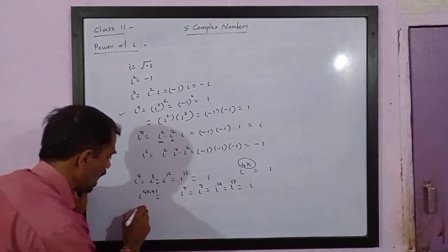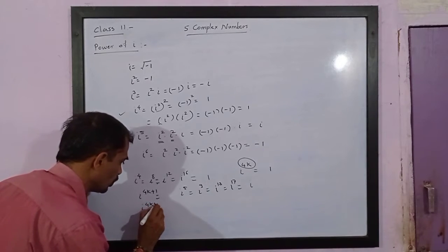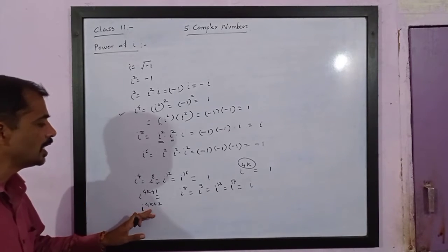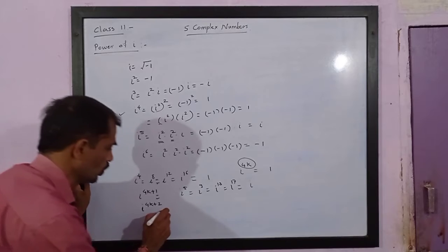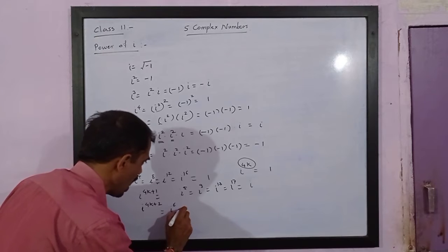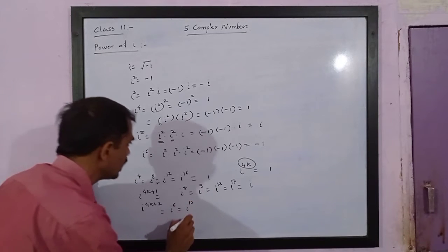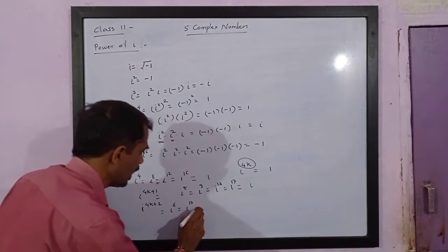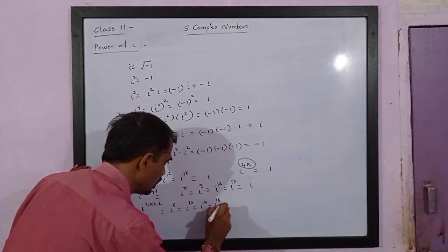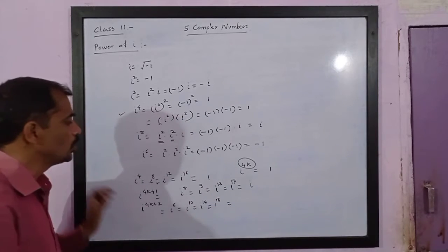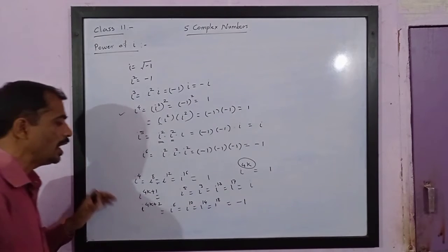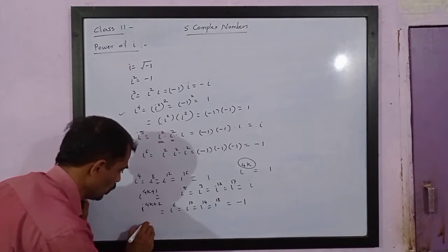Then, if you go for i raised to 4k plus 2 — if the power is 4 times some integer plus 2 — that is equal to i raised to 6, then i raised to 10, then i raised to 14, i raised to 18, and so on. You will notice the value comes to minus 1.